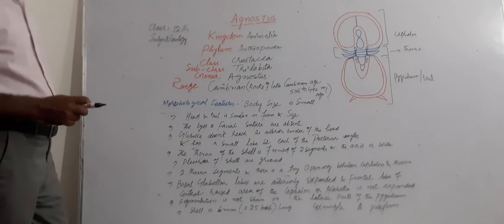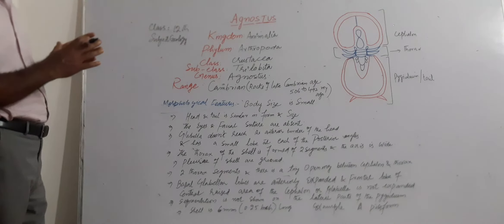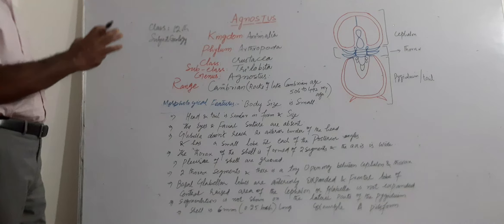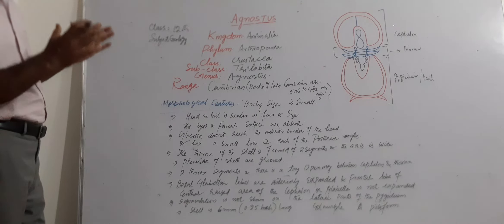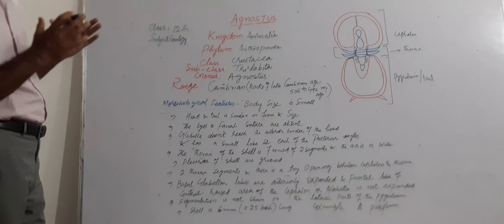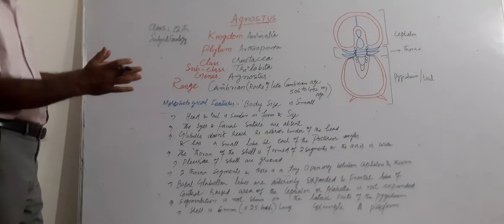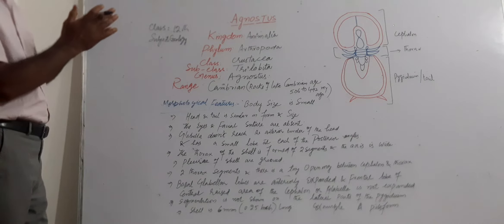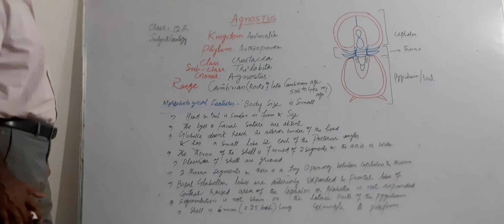And the pleural parts of the shell are grooved. These pleural parts of this shell of the thorax part are grooved. And we see here since the two thorax segments, there is a tiny opening between the cephalon and thorax. A tiny opening is between cephalon and thorax, and that means head part and the body part. A tiny opening is in between here, in the body and the head.